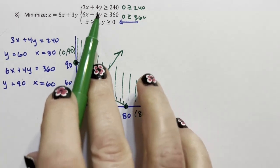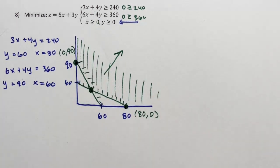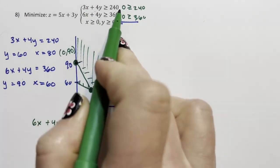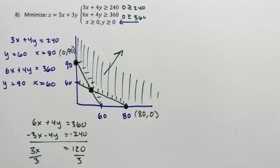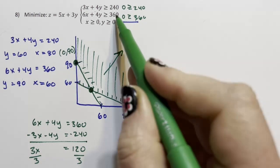To figure that out, the y's have the same coefficient. So I'm going to write out 6x plus 4y equals 360. And then I'm going to multiply that top equation by negative 1 to get negative 3x minus 4y equals negative 240. And I'm going to add down to get 3x equals 120 divided by 3, and x equals 40.